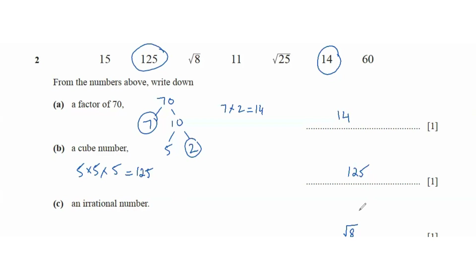25 is also a surd, but root 25 gives us 5, which is a whole number that can be expressed as a ratio. So in this case, root 8 is the only irrational number.